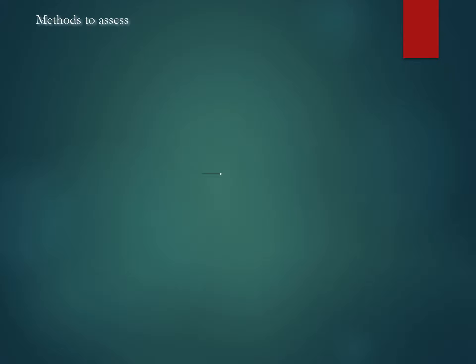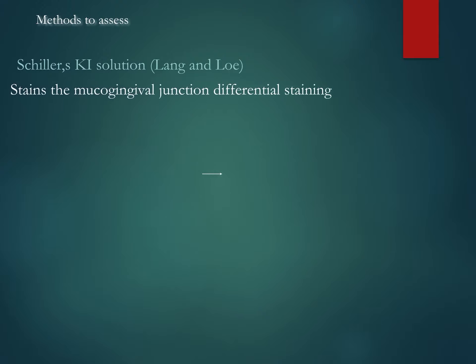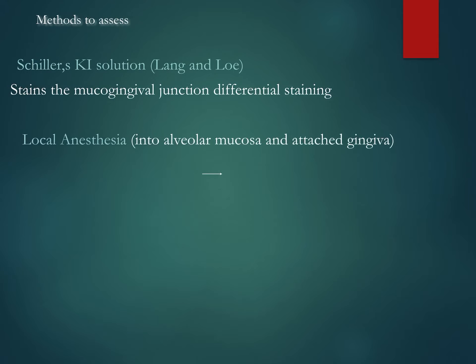The methods to assess attached gingiva are very important. Before you speak about adequate or inadequate attached gingiva, you need to know the methods. There is Schiller's iodine method — given by Lang and Lo, which is easy to remember. It stains the mucogingival junction differently because of the internal composition of alveolar mucosa and attached gingiva. That's how you discover where the mucogingival junction is and measure the distance.